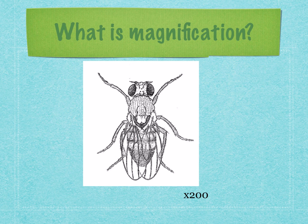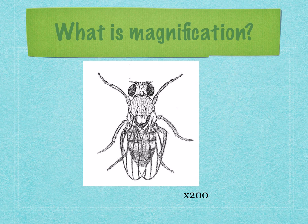So, what is magnification? Well, magnification is how much an actual image or organism has been enlarged by. For example, look at this fly — you can see that this fly has been enlarged. In an exam, you might be asked to calculate how many times bigger the image of this fly is compared to the original fly. This means you'll be calculating its magnification.